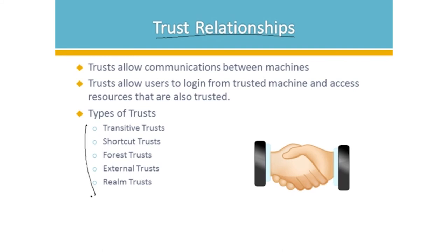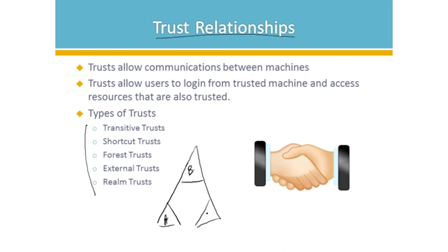There are a lot of different types of trusts. Here we'll generalize it because it's really more for an Active Directory class. But sometimes Exchange organizations do extend outside of our domain — there are ways to talk with a partner network. In a domain tree with a top-level domain and child domains, a transitive trust means if A trusts B and B trusts C, then A automatically trusts C. So a transitive trust means we can move up and down that tree.